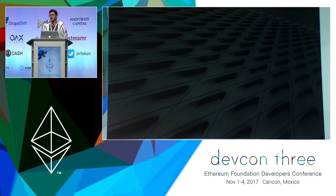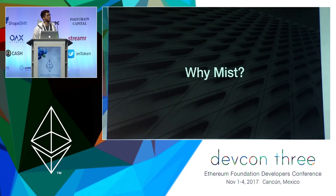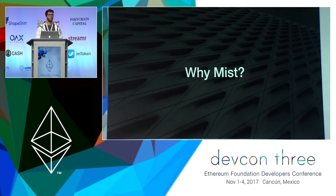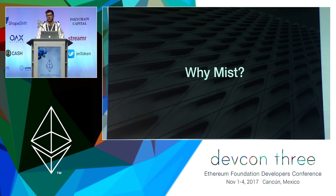We are here to talk about the MIST project. Why MIST? What's the vision of the project? It is to host Web3 projects — the land of the decentralized applications — where you could access websites that live not on a central server, but using peer-to-peer technology such as Swarm, and having the blockchain as the back-end.